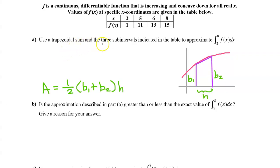They said to use the three subintervals indicated in the table. So one subinterval will be from 2 to 5, another will be from 5 to 6, and another will be from 6 to 8. We will find the area of three trapezoids, one for each interval, and add them up to approximate the area under the curve.